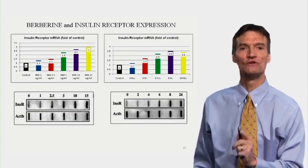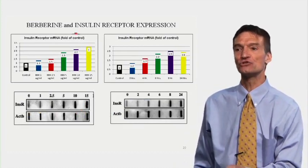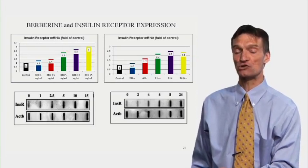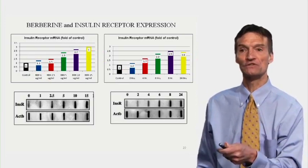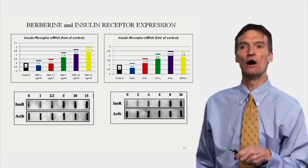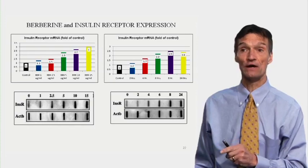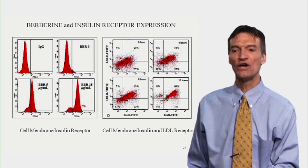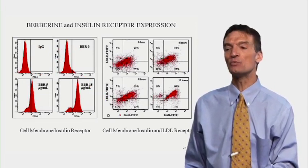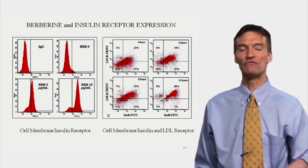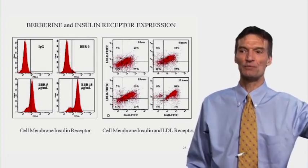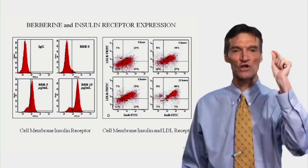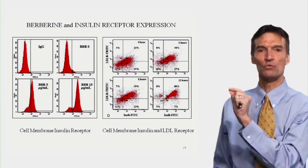Transcription of messenger RNA for the insulin receptor rises with berberine in a dose- and time-dependent fashion. More berberine over longer periods of time produces greater transcription of the insulin receptor mRNA. We see increased expression of the insulin receptor on the cell membrane, and as we increase expression of the insulin receptor, we're also increasing expression of the LDL receptor. We want high levels of both insulin receptors and LDL receptors on our cells — this is achieved with berberine. No drug can do this.